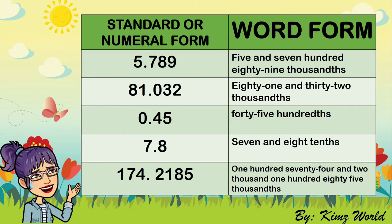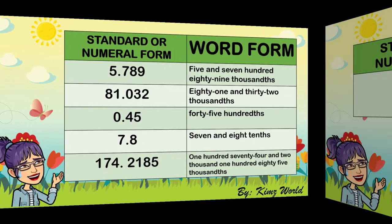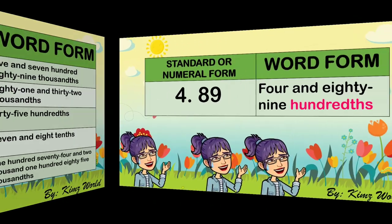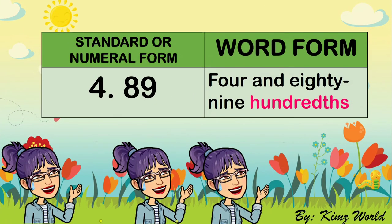Let's learn how to write decimal numbers in words properly. This is like writing a whole number. We have to observe the correct spelling of the word 'and,' and the proper placing of hyphens. For example, we have this number: it is read and written as '4 and 89 hundredths.' Notice that we also need to put a hyphen between compound words. Another thing to consider is the '-ths' at the end of the place value in a decimal number.